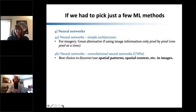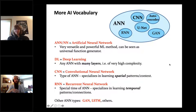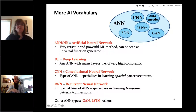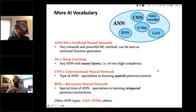More AI vocabulary: ANNs or NNs are artificial neural networks. People use ANN to contrast with biological neural nets that are in actual meat brains — that's why the A is there. These methods are really versatile and powerful and can be seen as a universal function generator. There's mathematical proof that if you have a neural network with enough hidden layers and nonlinear activation functions, it can approximate any mathematical function to any degree of accuracy if trained long enough.